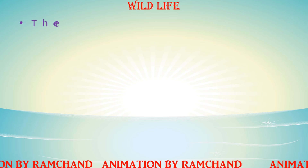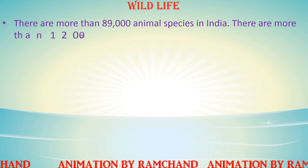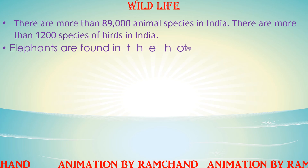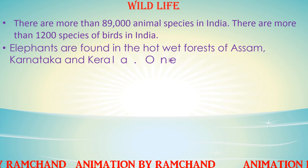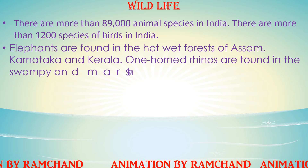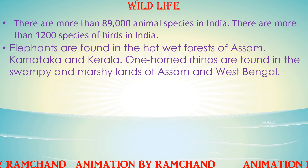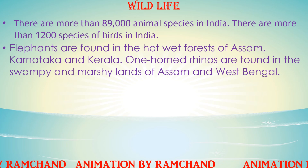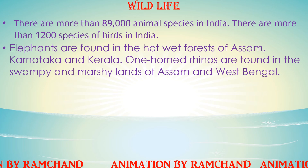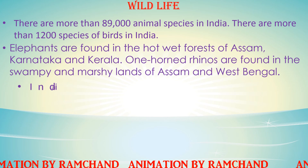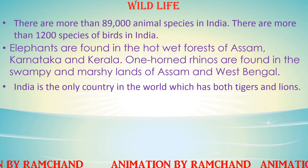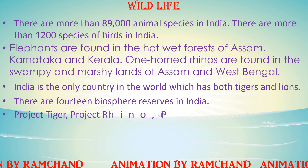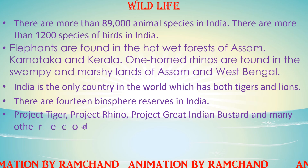There are more than 89,000 animal species and more than 1,200 species of birds in India. Elephants are found in the hot wet forests of Assam, Karnataka, and Kerala. One-horned rhinos are found in the swampy and marshy lands of Assam and West Bengal. India is the only country in the world that has both tigers and lions. There are 14 biosphere reserves in India, along with Project Tiger, Project Rhino, and Project Great Indian Bustard.